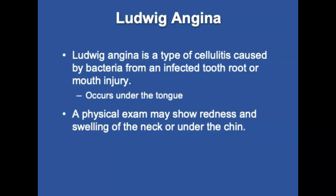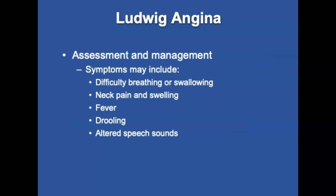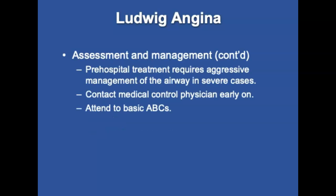Ludwig's angina is a type of cellulitis caused by bacteria from an infected tooth, root, or mouth injury occurring on the floor of the mouth under the tongue. It causes rapid swelling and airway obstruction, redness and swelling of the neck or under the chin, and the tongue may be swollen. An airway through the nasal passages may be needed. Symptoms include difficulty breathing, difficulty swallowing, neck pain and swelling, fever, drooling, and altered speech. Pre-hospital treatment requires aggressive airway management and early contact with medical control. Remain calm and organized, attend to the basic ABCs, and pay attention to conditions and smells originating in the mouth.